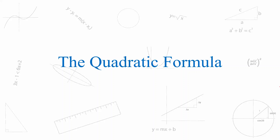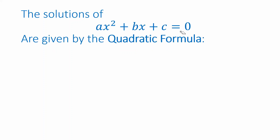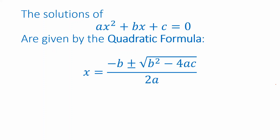We have several techniques for solving polynomial equations that are quadratic, meaning their highest power is x squared, and one of the most useful is the quadratic formula. If we want to solve a quadratic equation written in the standard form, where a, b, and c are given coefficients, then the solutions are given by: x equals negative b plus or minus the square root of b squared minus 4ac, all divided by 2a.